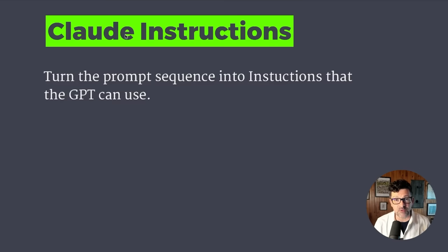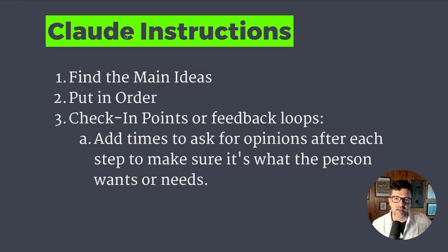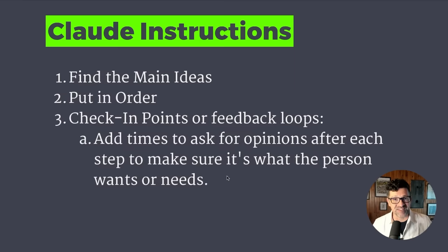Now moving on to turning that prompt sequence into a set of instructions that we can upload right into Claude. This is the part that requires a little bit of work and knowledge on your side. The first thing you want to do is find the main ideas, make sure that they're in the right order, and then you want to add in these check-ins or feedback loops. At times in these instructions, you're going to make sure that the large language model is asking for opinions after certain steps, to make sure it's what the user — you or whoever you're building this automation process for — is on the right track.